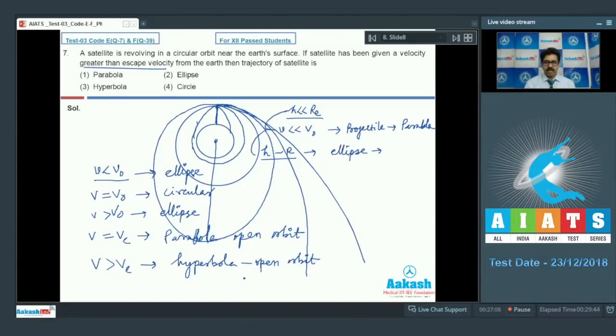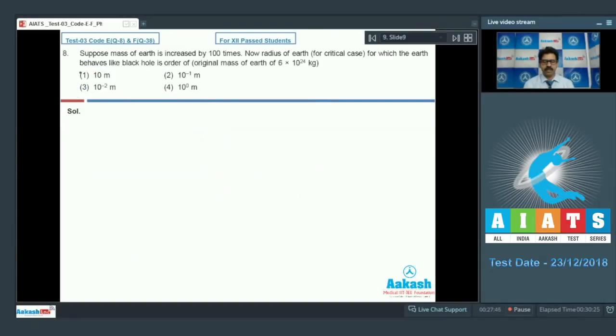These are the different paths or trajectories at different velocities. Direct questions come on this, so you don't need to waste time thinking. Straight remember the path, what type of path for what velocity, then tick the correct answer. Here the correct option is option number three.